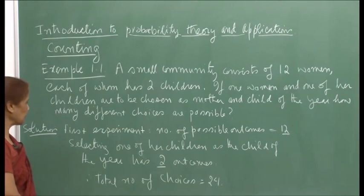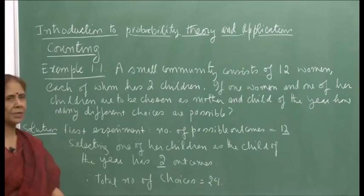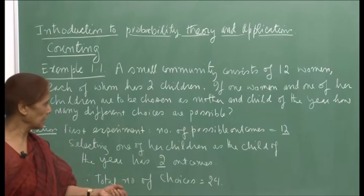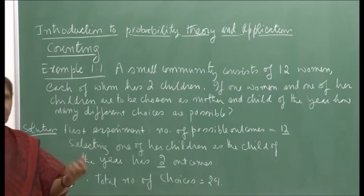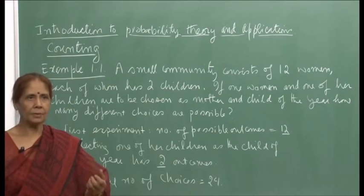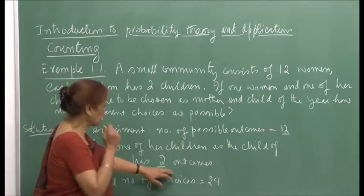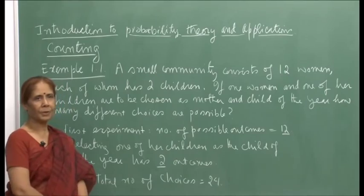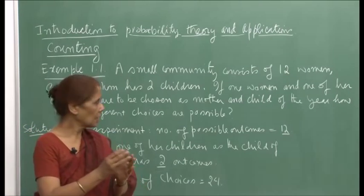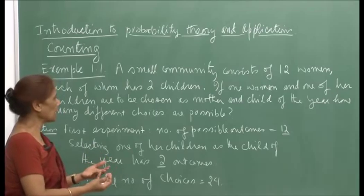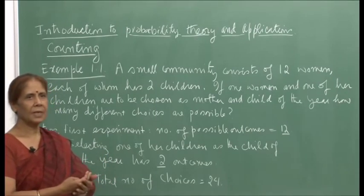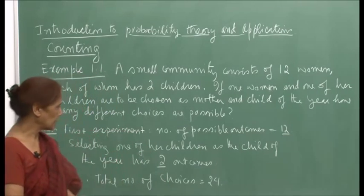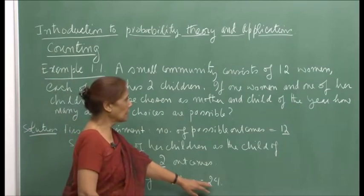The second experiment would be selecting one of her children as the child of the year. Once you have chosen the mother of the year, she has two children, so only one of them can qualify to be the child of the year. Therefore, the possible outcomes are two, and the total number of choices is 24. I broke up this event of choosing the mother and child of the year by first choosing the mother, and then one of her children.